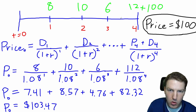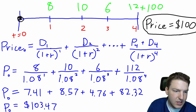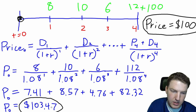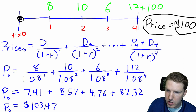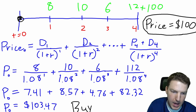When we discount all four cash flows back to present value, we come up with an intrinsic value of one hundred and three dollars and forty-seven cents. This is higher than what the market is currently pricing the stock at — one hundred dollars — which means this stock is definitely a buy based on the dividend discount model.